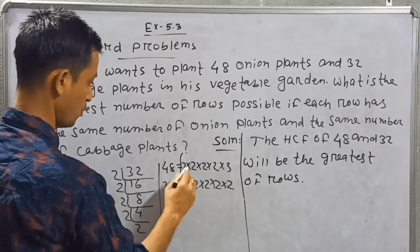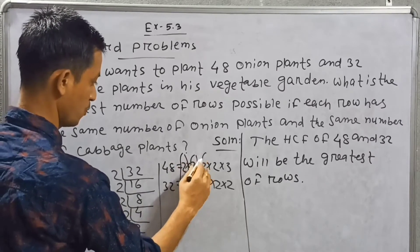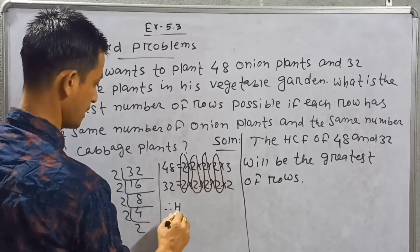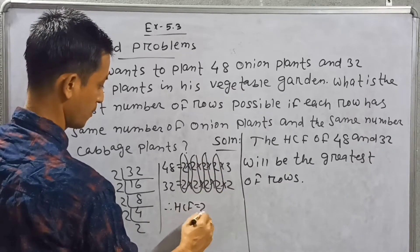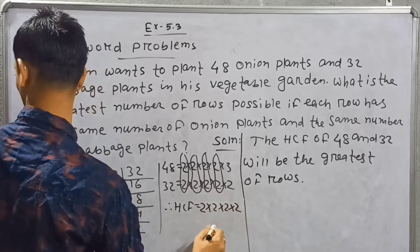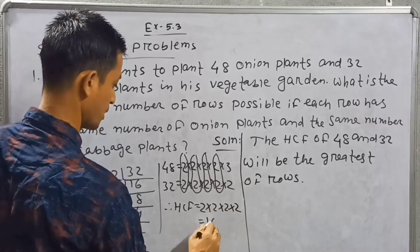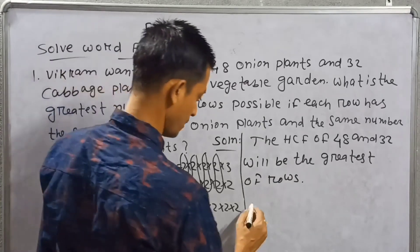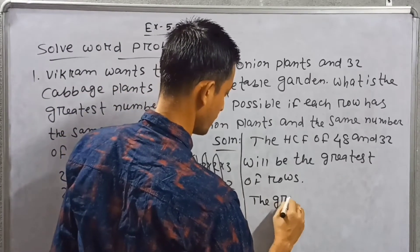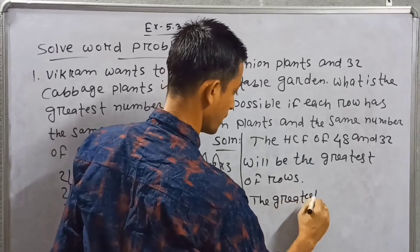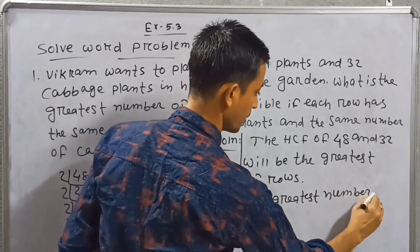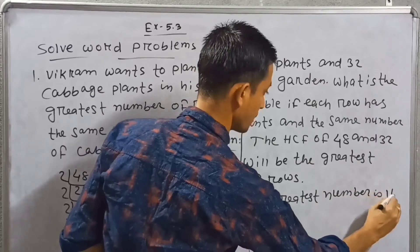The common factors are 2 × 2 × 2 × 2. Therefore the HCF of 48 and 32 is 2 × 2 × 2 × 2 = 16. So the greatest number of rows possible is 16.